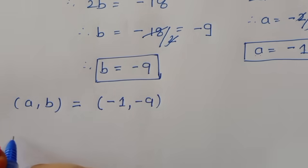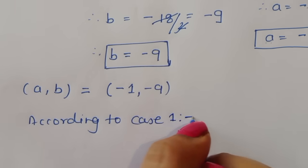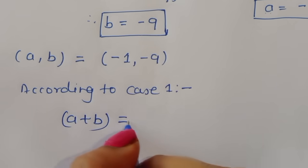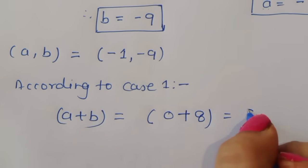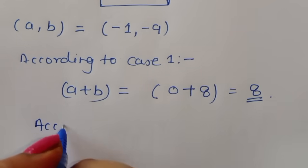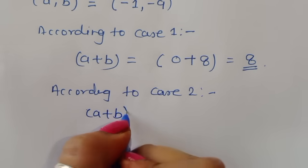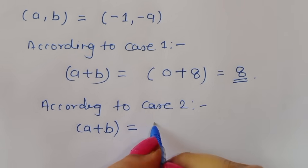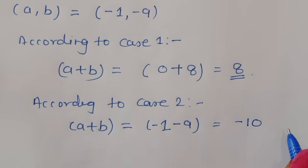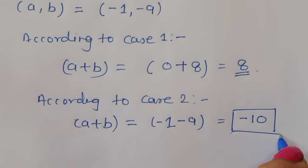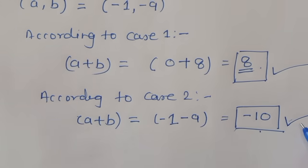Now we find a + b for each case. According to Case 1, a + b = 0 + 8 = 8. According to Case 2, a + b = −1 + (−9) = −10. So from Case 1 the answer is 8, and from Case 2 the answer is −10. Thank you.